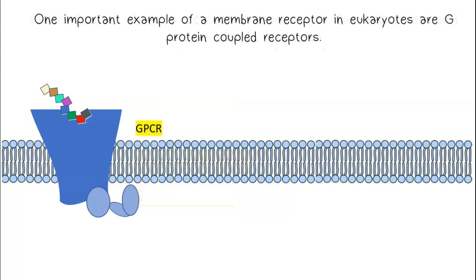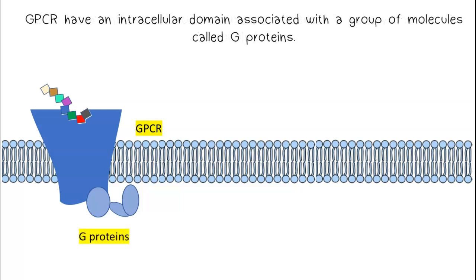One important example of a membrane receptor in eukaryotes are G protein-coupled receptors. G protein-coupled receptors have an intracellular domain associated with a group of molecules called G proteins.